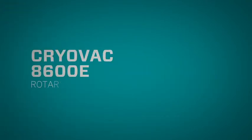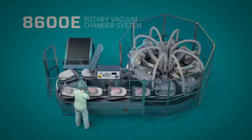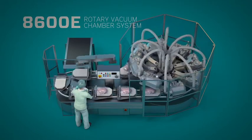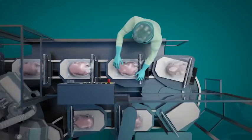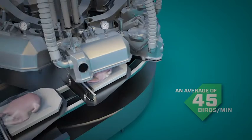The birds then travel to the cryovac rotary vacuum chamber machine, where a single worker aligns the bag with the sealing bars. The birds exit the rotary chamber with a tight vacuum seal, efficiently and effectively at speeds that average 45 birds per minute.